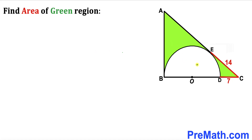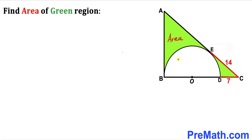In this video we have a semicircle with center O fully inscribed in a triangle ABC, such that segment CD is 7 units and segment EC is 14. Our task is to find the area of the green shaded region — the two green areas combined.